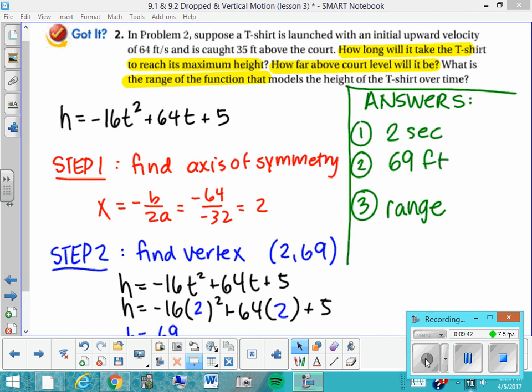Okay, so I've answered two of the questions already. One is how long will it take the t-shirt to reach its maximum height, two seconds? How far above court level will it be, 69 feet? And the last question is what is the range of the function? So the t-shirt starts at 5 feet. So I know that the height, which is my y variable in this case, my dependent variable, is going to be greater than or equal to 5 feet. Okay, and it's also going to be less than or equal to its maximum height, 69.